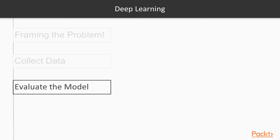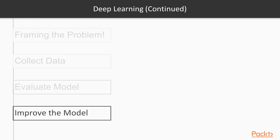Feed the resulting feature set from the processed data to a learning algorithm to build models, and evaluate the quality of the models on data that was held out from model building. Use the model to generate predictions of the target answer for new data instances. We'll further discuss bias and variance as parameters to monitor model performance and ways to improve and optimize the model.